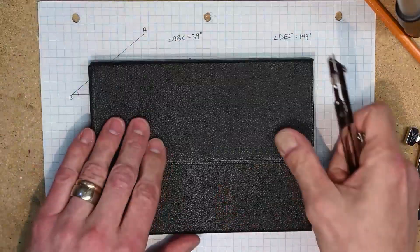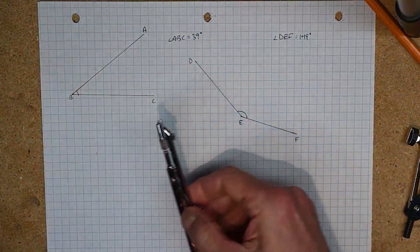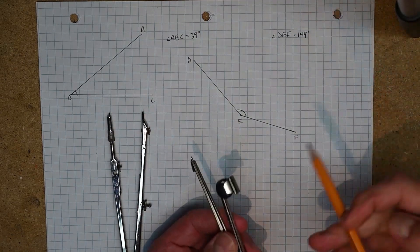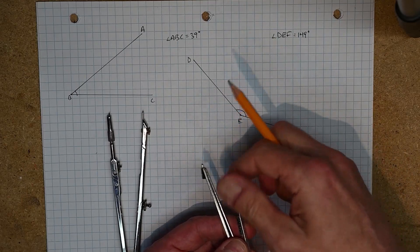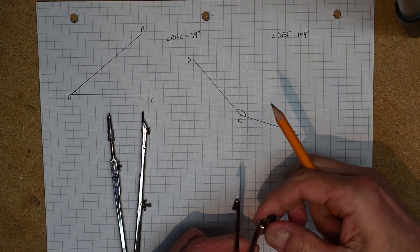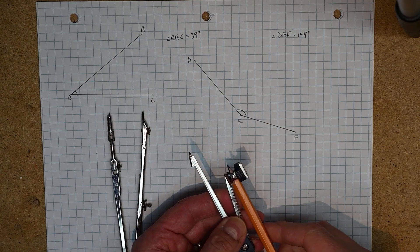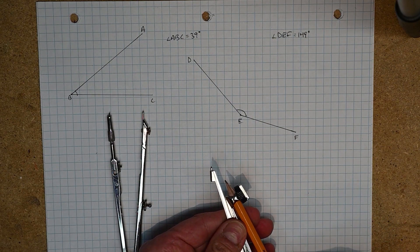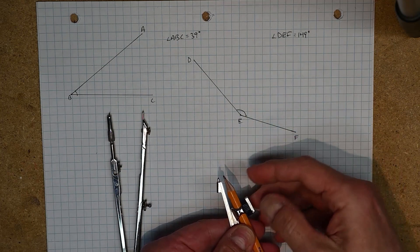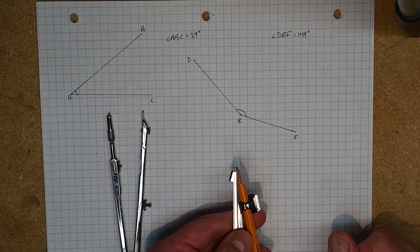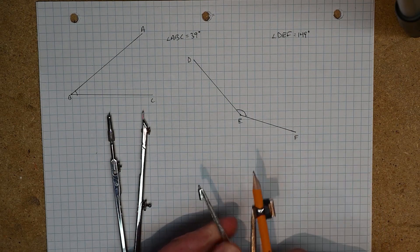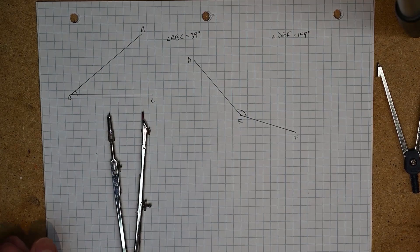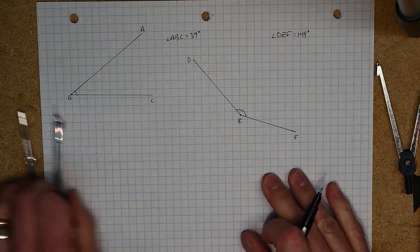So this is the instrument we need. Now the ones that you folks have will be a little different from mine. I think they'll probably look a bit more like this, and with this kind you unscrew that as far as you can and then you place your pencil in it. The trick here is not to have it too far up or too far back, but so that the lead and the point approximately line up with each other. That's your best situation. And then we go to draw our triangle.